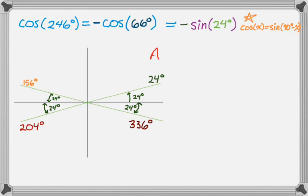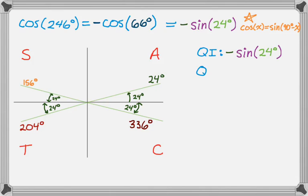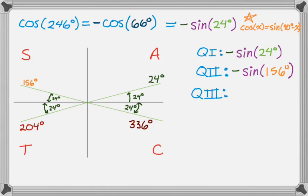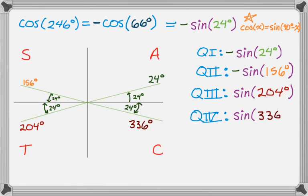Applying ASTC again: in the first quadrant I already know the result is negative sine of 24 degrees. In the second quadrant, sine is positive, so to maintain equality I need negative sine of 156. In the third quadrant, sine is negative, so the sine of 204 degrees works directly. In the fourth quadrant, sine is also negative, so I can use sine of 336 degrees without multiplying by negative 1.